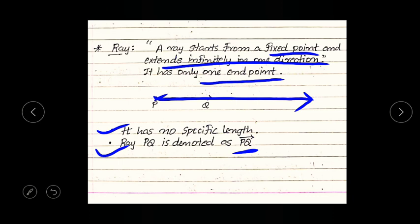So till now we have seen what is a point, what is a line, what is a line segment, and what is a ray. I hope you have watched the video carefully. If any concept is not clear, please re-watch the video, and if it is still not clear, message me or comment below so I can make another video on the same topic. Thank you, students.